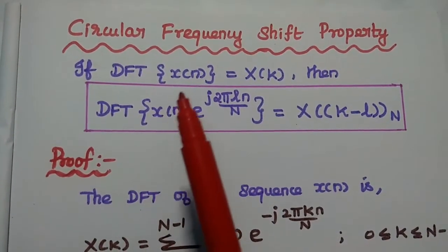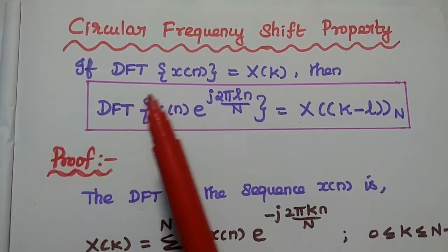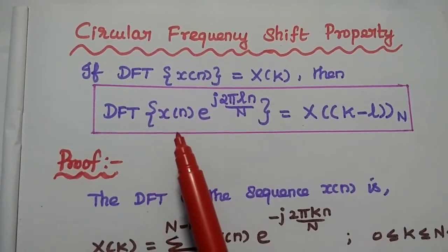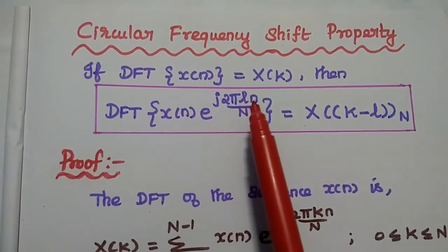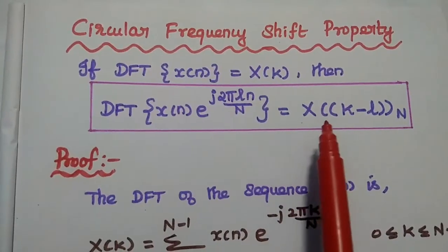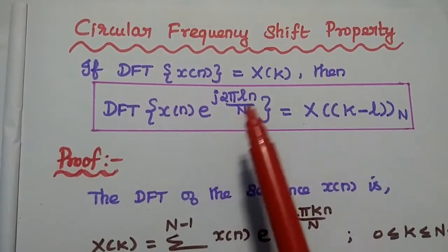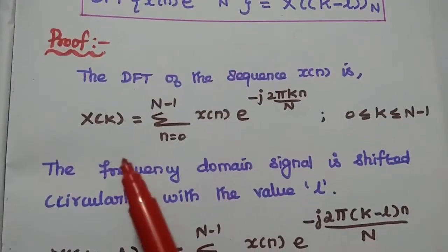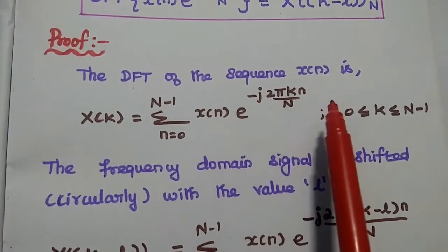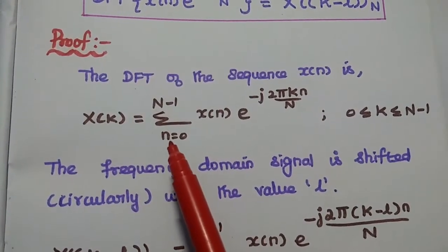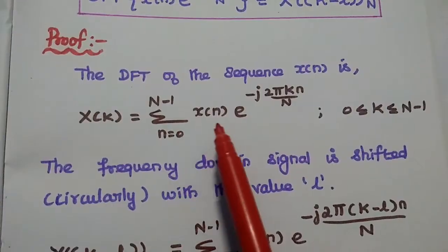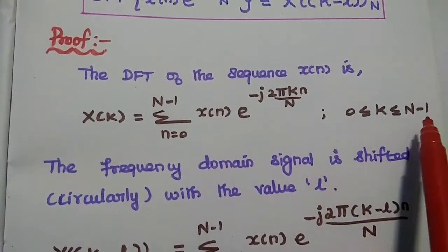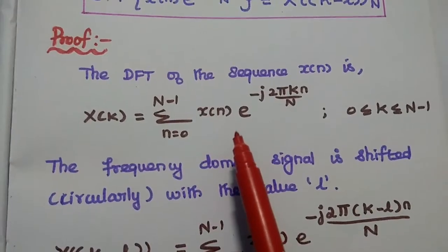The next property is the circular frequency shift property. If DFT of the sequence x(n) is equal to X(k), then the DFT of x(n) × e^(j2πln/N) is equal to X((k−l)) mod N, where l represents the frequency parameter. The DFT formula is: X(k) = summation n=0 to N−1 of x(n) × e^(−j2πkn/N), where k varies from 0 to N−1.